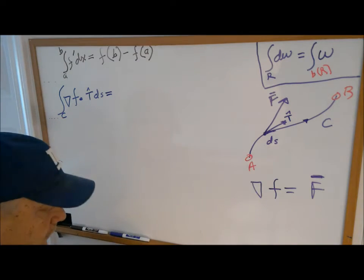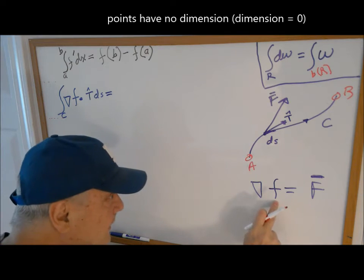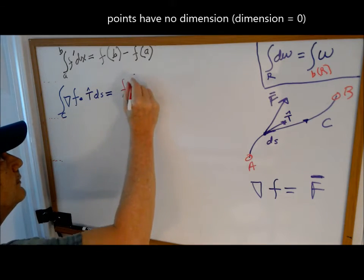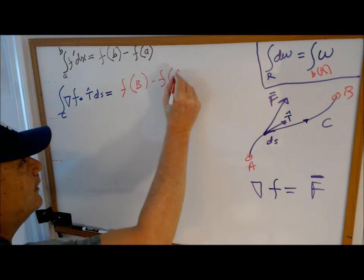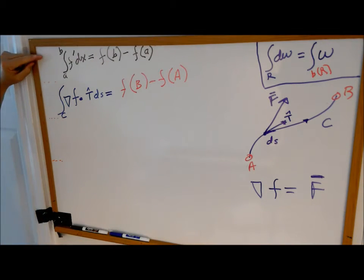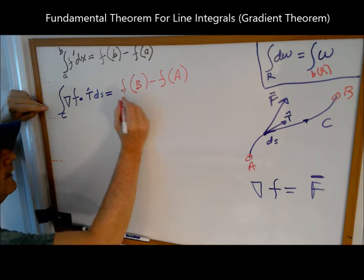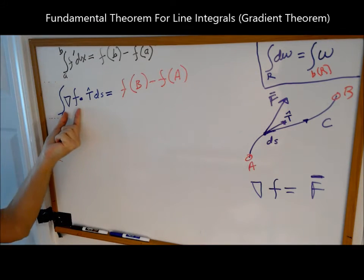And that's equal to, well, in red is the boundary points, and we say when we integrate over something that has no dimension, you just take the object, the anti-gradient, at those points and subtract. So it's very much like single variable calculus. We call this the fundamental theorem for line integrals, and I prefer to call it the gradient theorem.